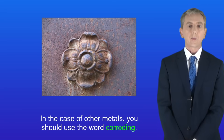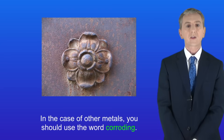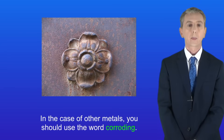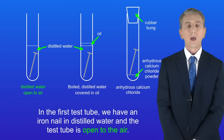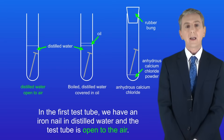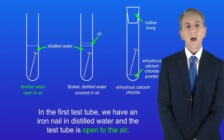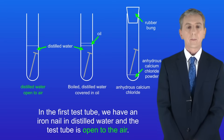In the exam you could be asked to describe how to carry out an experiment on the conditions required for rusting. I'm showing you here three test tubes. In the first test tube we've got an iron nail in distilled water and the test tube is open to the air.